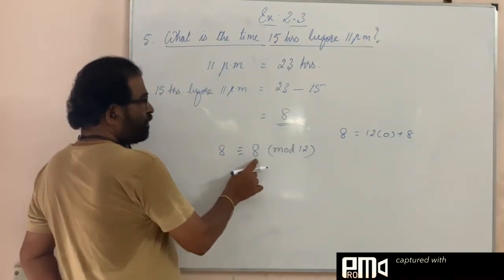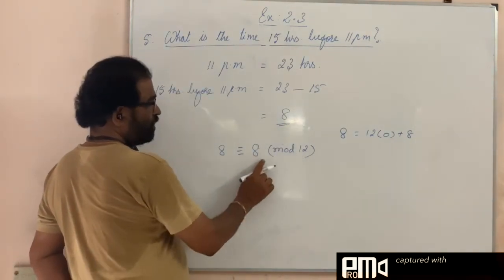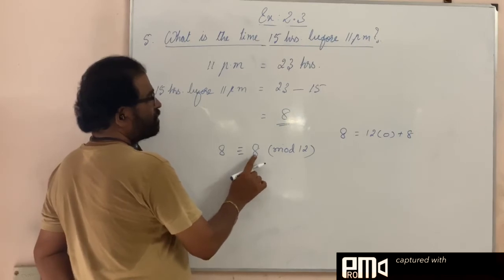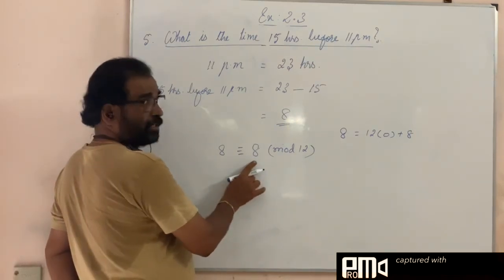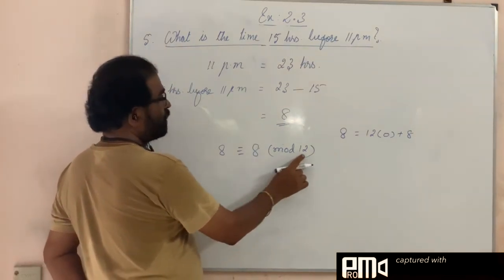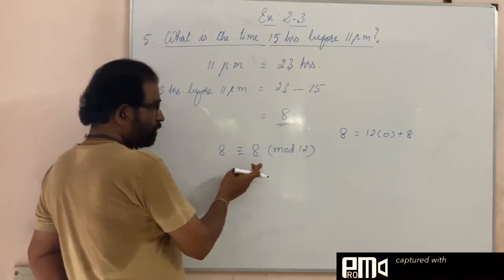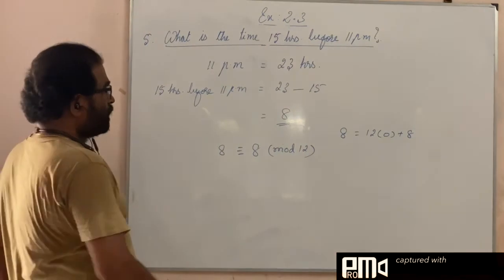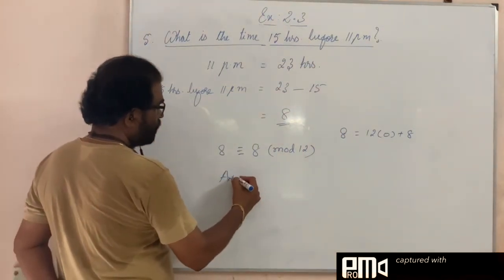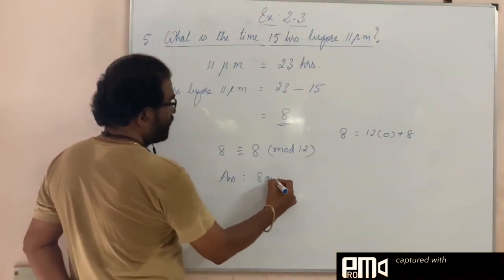Suppose if you get a number greater than 12, like 13—then 13 means 13 divided by 12, take the remainder. 14 means 14 divided by 12, take the remainder. Because this is already less than 12, you can leave it like that. So the answer is 8 a.m.